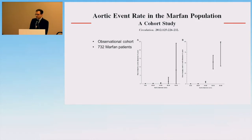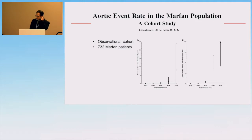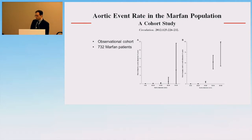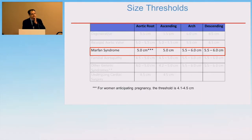The third cohort we separate out is patients with Marfan syndrome. Some of the best data comes from a 2012 paper with a cohort of 732 Marfan patients, which noted that the risk of aortic complications below 5 centimeters was substantially low and rapidly increased beyond 5 centimeters. Along with other smaller observational studies, this led to the recommendation that the threshold in Marfan syndrome should be 5 centimeters for the aortic root and ascending aorta.